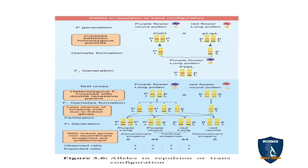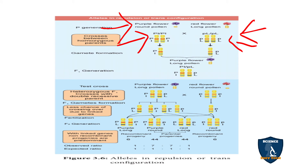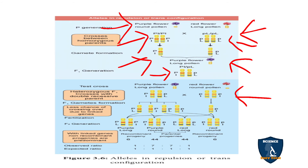To prove repulsion, purple flower with round pollen is crossed with red flower long pollen. That means the genes are PPll crossed with ppLL. The gametes are Pl and pL. In F1 generation you get the offspring as capital P small p, capital L small l — heterozygous condition.